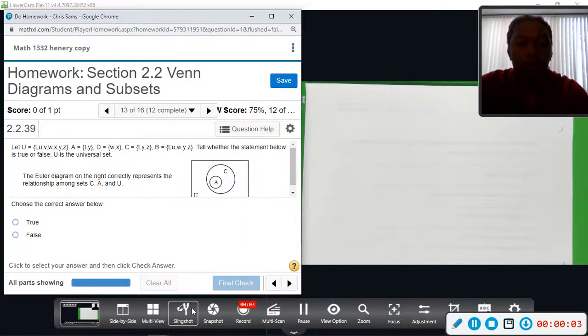Alright, number 13. We have let U be the set {u, v, w, x, y, z}, A is {t, y}, D is the set {w, x}, C is the set {t, y, z}, and B is the set {t, u, w, y, z}.